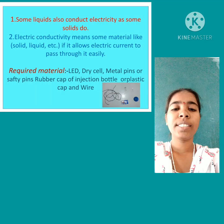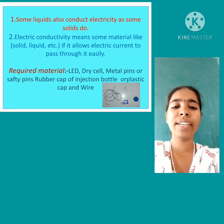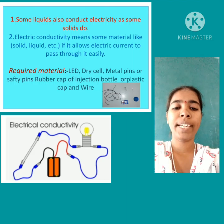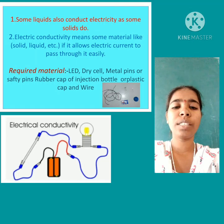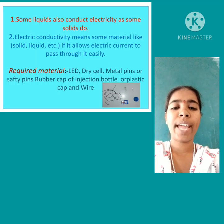Some solids allow electric current to pass through them easily. Some liquids also allow electric current to pass through them, like some solids do. Electric conductivity means if some material allows electric current to pass through it easily. For this purpose, we do one activity.